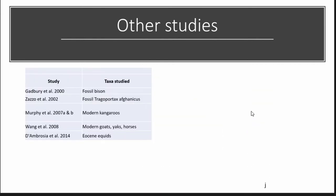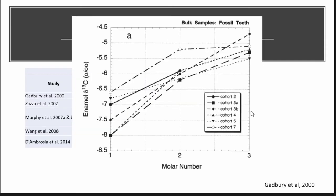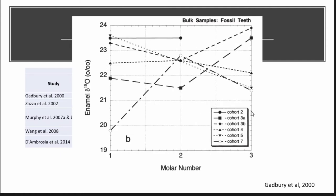There aren't many studies that have done actual inter-tooth analysis — most have done serial sampling. Some studies have investigated inter-tooth differences in carbon and oxygen. The first is Gadbury, investigating fossil bison, who found quite a nice pattern: the M1 has a lower δ13C value, which is as expected. Oxygen, however, is not nearly as clear, with a lot more variation and no systematic offset across the molars.